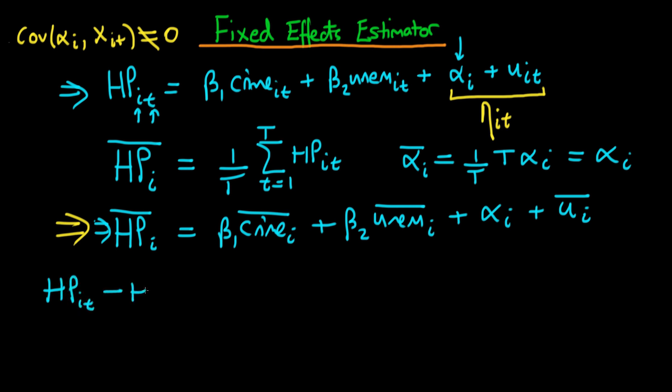So essentially what we get then is we get that the house price in city i at time t minus the time averaged house price is equal to beta 1 times the crime rate in city i at time t minus the average crime rate in city i across all time, plus beta 2 times the unemployment rate in city i at time t minus the average unemployment rate in city i across all time.